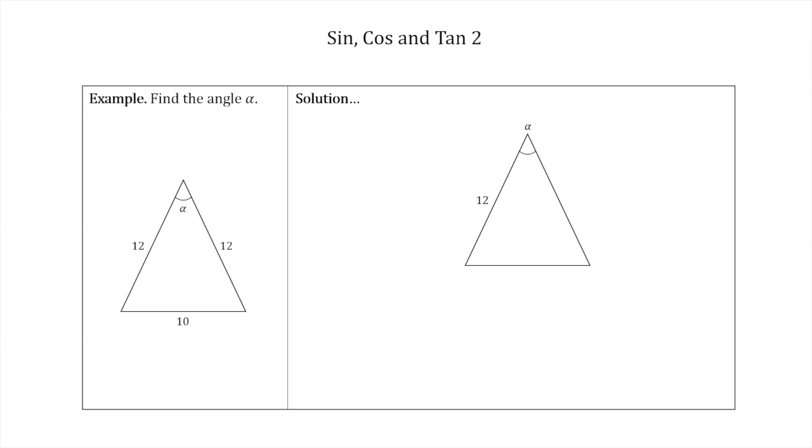I'm going to label the angle alpha and label one of these two sides that are length 12. Then I'm going to draw a line down the middle of the triangle which makes a right angle with the base. Because this is an isosceles triangle, this line has essentially completely cut this triangle into two equal triangles, both of which are right angle triangles, and it's cut the angle alpha completely in half.